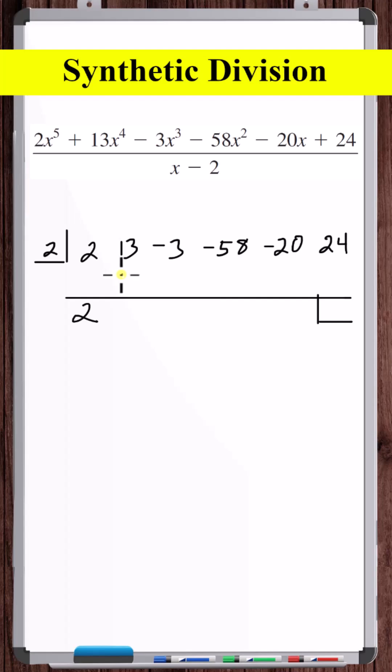Multiply two times the c, that's four. Put the four here. Add these two. Thirteen plus four is seventeen.